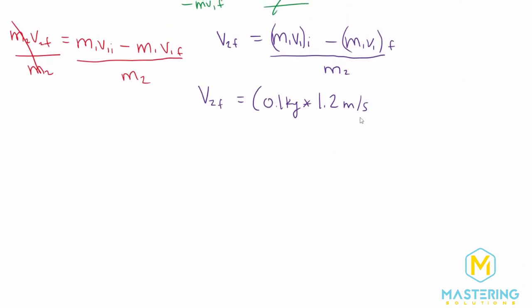Okay, so now when we plug that in here, we get a minus 0.1 kilograms, since the mass is the same. And then that will be multiplied by a negative 0.85 meters per second. And then we're dividing the whole equation by the mass of the second cart, which was 1 kilogram.